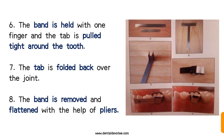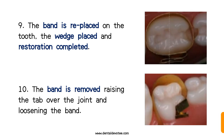The band is held with one finger and the tab is pulled tight around the tooth. The tab is then folded back over the joint. The band is removed and flattened with the help of pliers, and then finally it is replaced on the tooth. The wedge is placed and the restoration is completed.